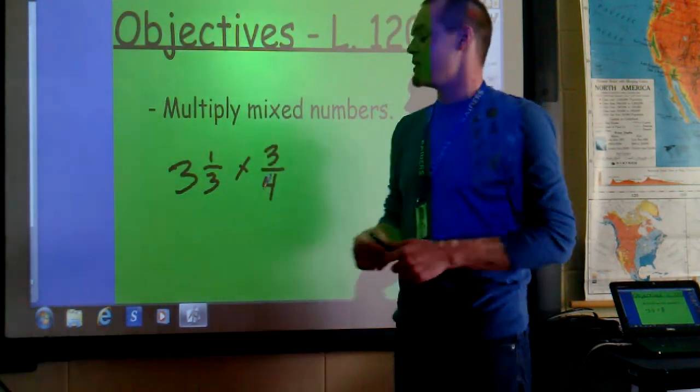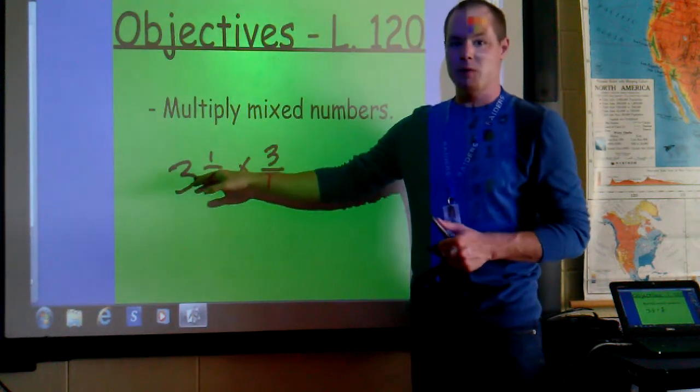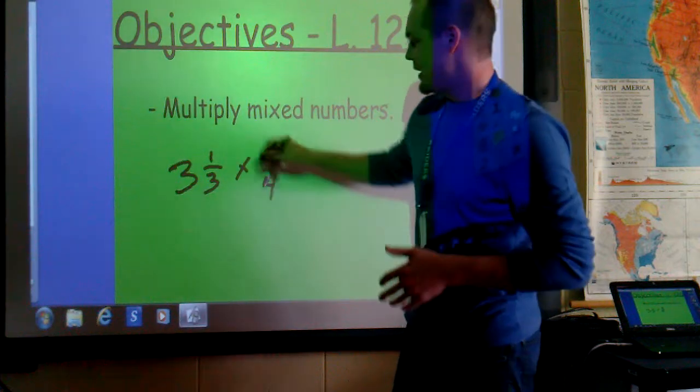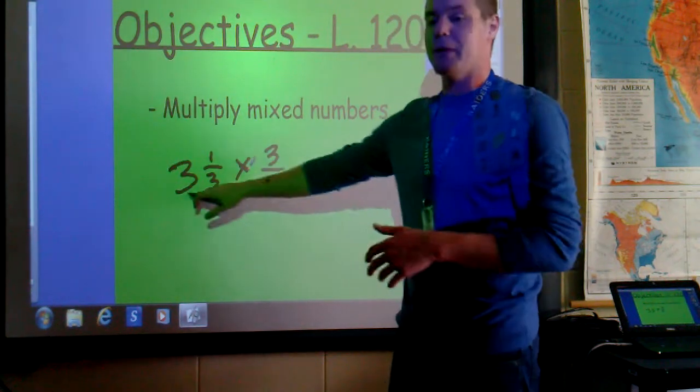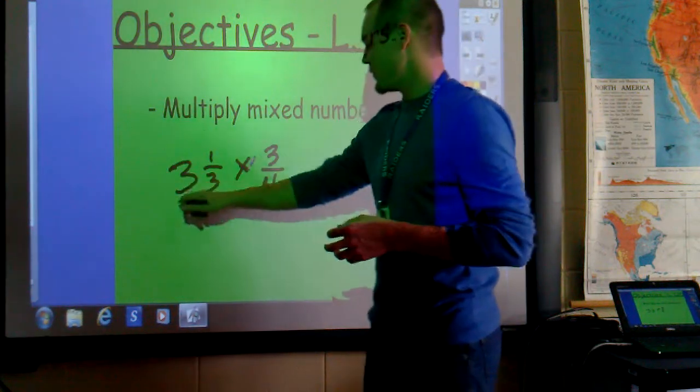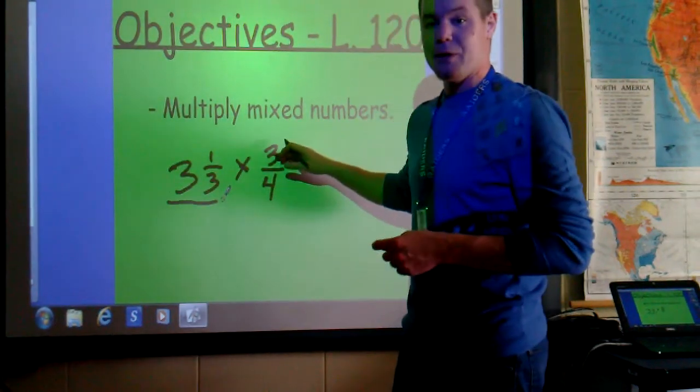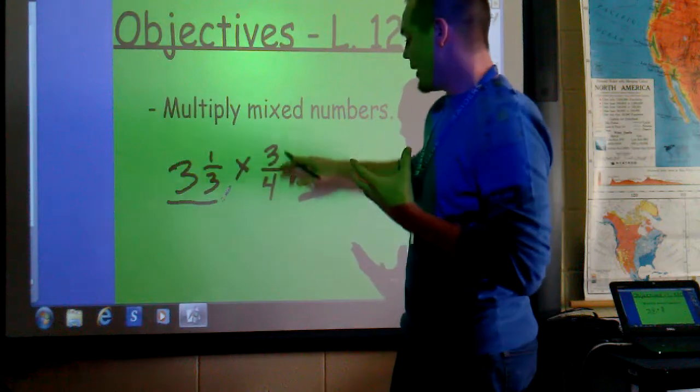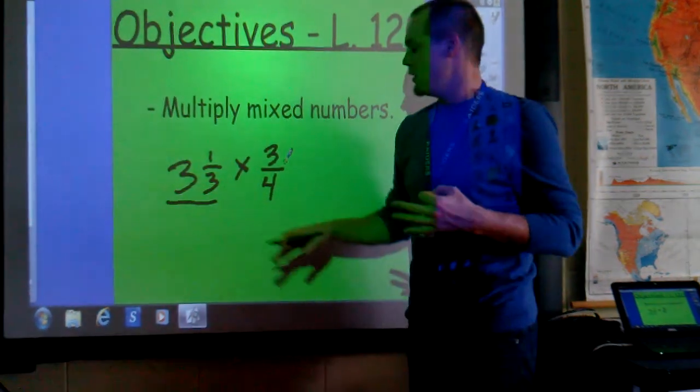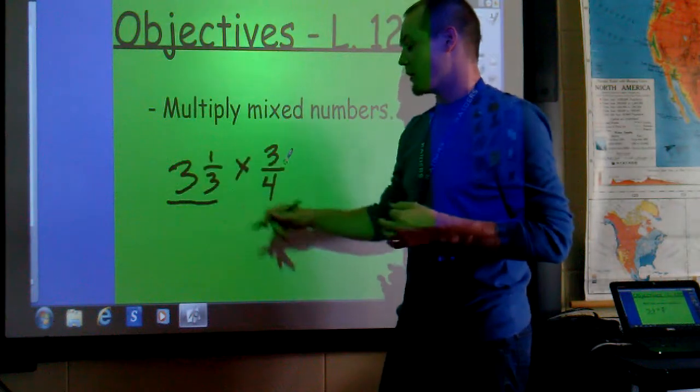Now instead of telling you to take 3 and 1 third, the mixed number 3 and 1 third, and make it an improper fraction, you will just understand that you need to do that before you multiply two fractions. If this is a mixed number, you're multiplying it with a number, either a fraction, an improper fraction, or a mixed number, you do have to make this an improper fraction.